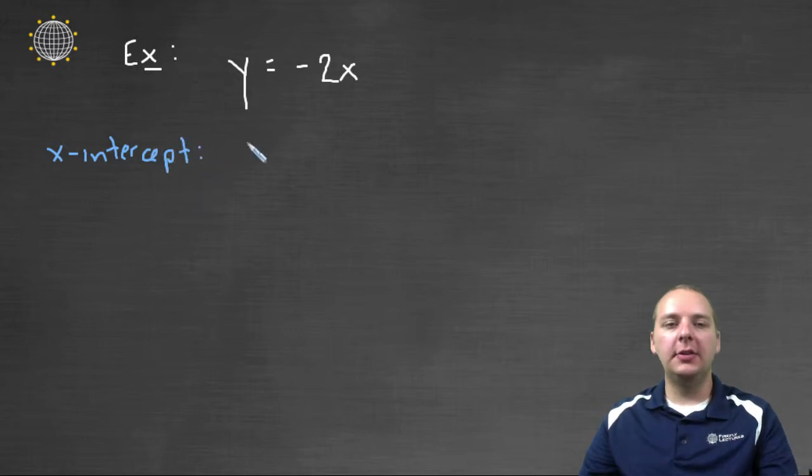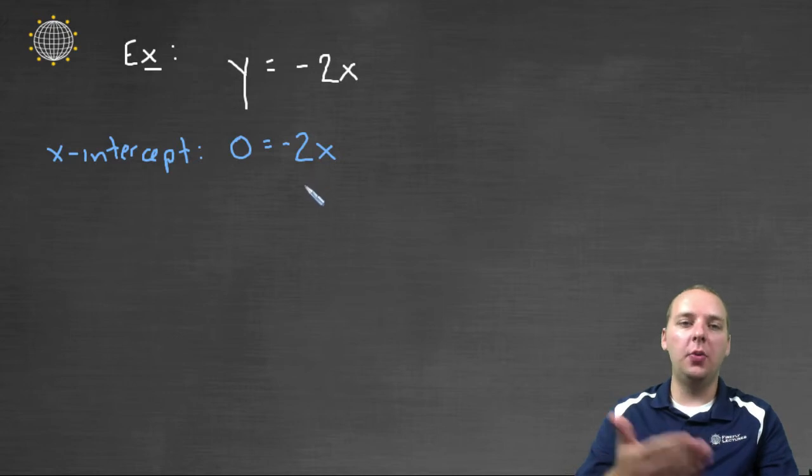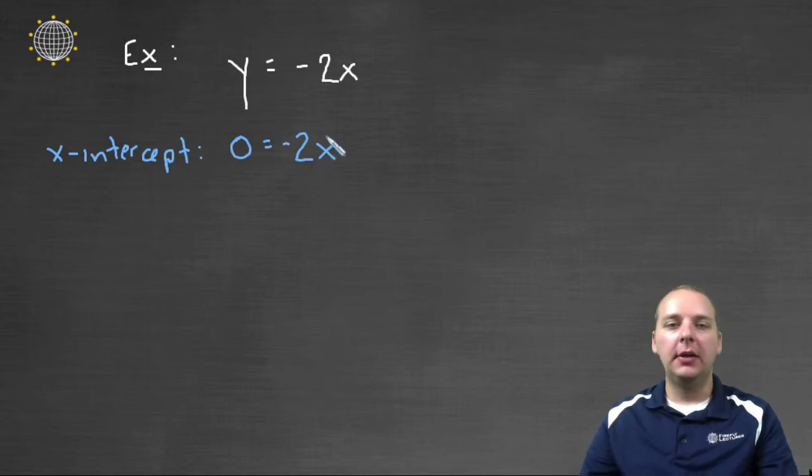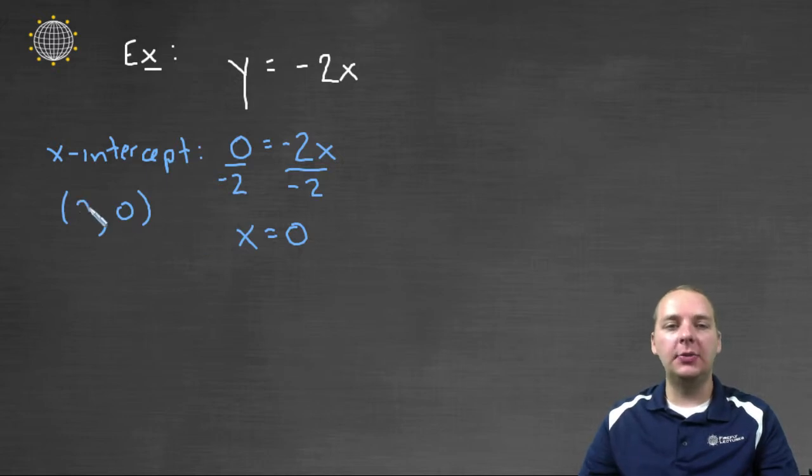So if you're trying to graph this using intercepts, we'll start with the x-intercept. If we're looking for the x-intercept, we know that we're supposed to let the y-value be zero. And then look for the x-coordinate that would correspond to a y-value being zero. To solve for x, we divide both sides by negative two. And so x equals zero. So my x-intercept, I let y be zero, and I discovered that x would be zero. So right off the bat, I know my x-intercept is at the origin.